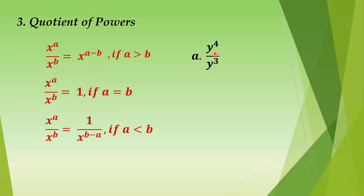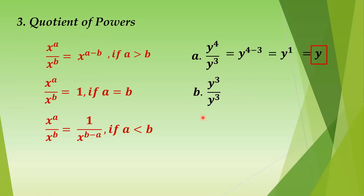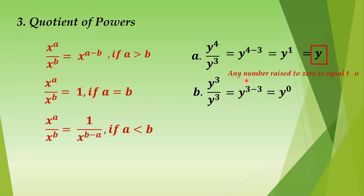Examples: Letter A — y raised to 4 over y cubed. Apply the first property: y raised to 4 minus 3, which equals y raised to 1, or simply y. Letter B — y cubed over y cubed. These are the same, so the answer should be 1. Applying the formula: y raised to 3 minus 3, which is y raised to 0. By the property, that equals 1.